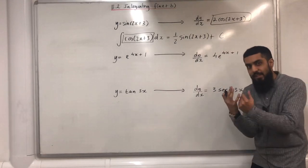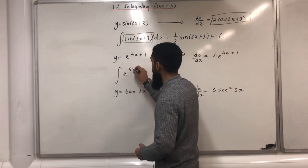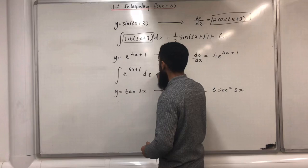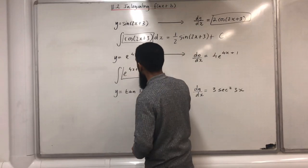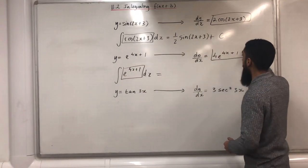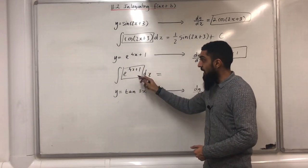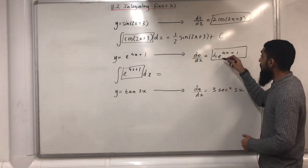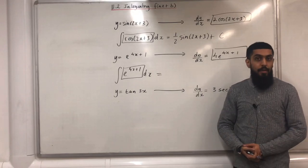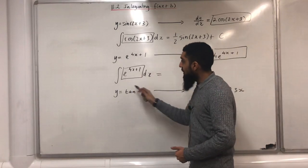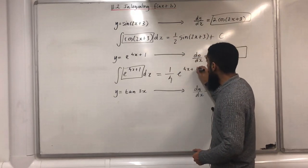Moving on to my next integral. I want to find the following integral. My first step is to put a rectangle around e to the power of (4x + 1) and a rectangle around 4e to the power of (4x + 1). The coefficient of e^(4x+1) over here is 1 and the coefficient over here is 4. How do I go from 1 to 4? I can divide by 4. Therefore this particular integral will just be a quarter e to the power of (4x + 1) + c.